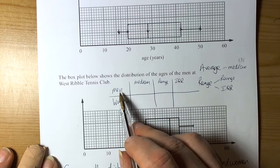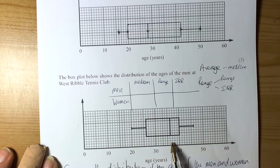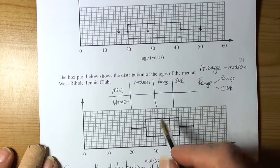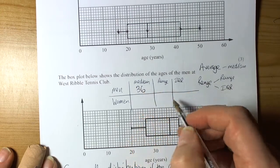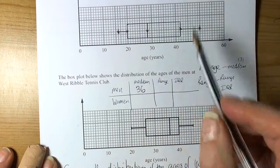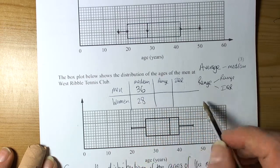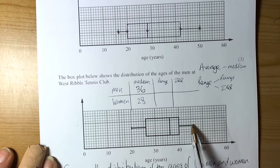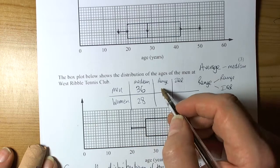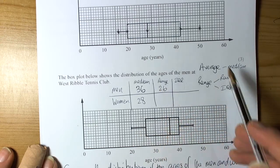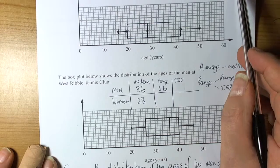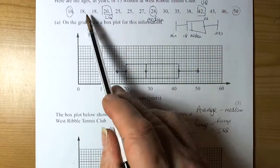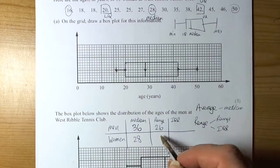So, for the men, the median average was 36, and for the women, we calculated it as 28. The range for the men, well, the maximum value was 46, down to 20, so that's 26. And for the women, it went from 50 down to 16, so that's going to be 34.